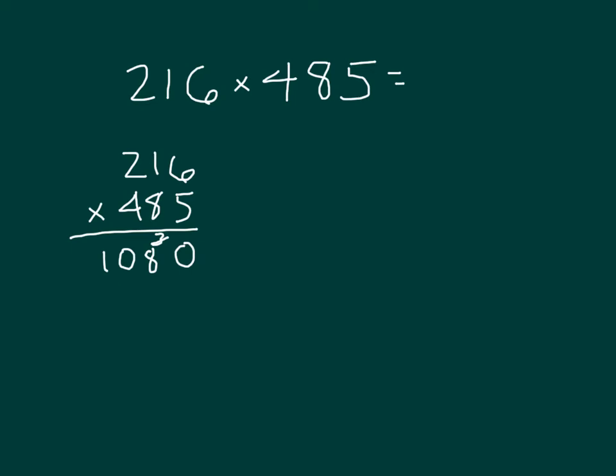Then I'm dealing with the 8, which is worth 8 tens, that's why I can place a zero. And then multiply that 8 times that 216. 8 times 6 is 48, 8 regroup a 4. 8 times 1 is 8, plus 4 is 12, 2 regroup a 1. 8 times 2 is 16, plus 1 is 17.